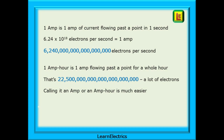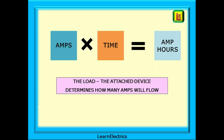One amp hour, however, is one amp flowing past a point for a whole hour — a huge 22,500 million million million electrons an hour. For you and me, calling it an amp or an amp hour is much easier. Amps multiplied by time, hours in this case, gives us amp hours. And it is the load — the attached device — that determines how many amps flow. If a healthy device is operating at the correct voltage, it will draw the designed current to function as intended.